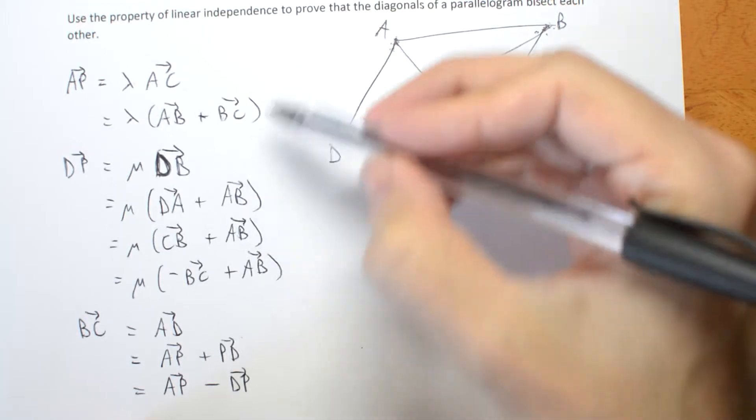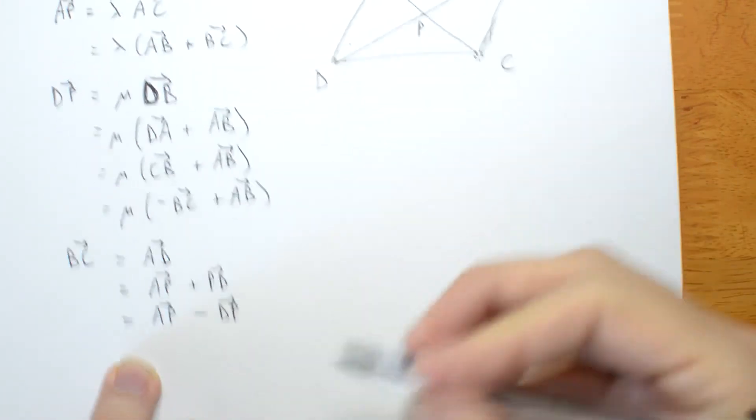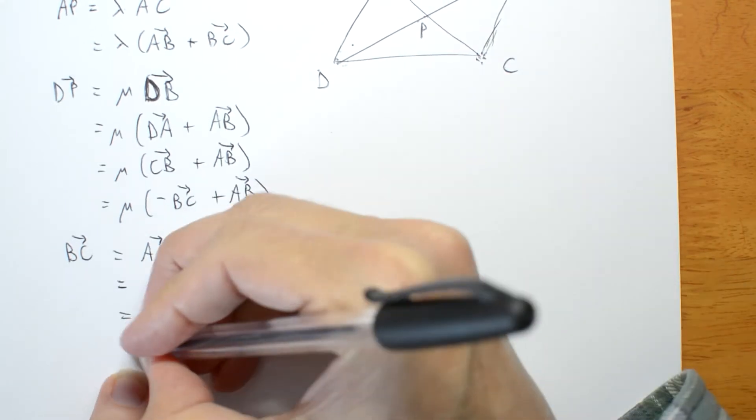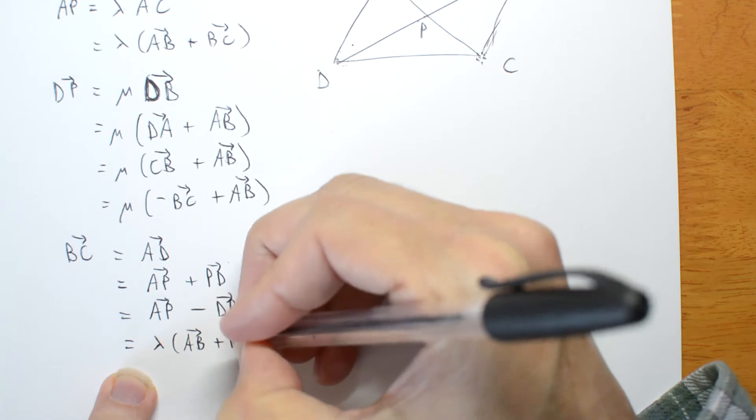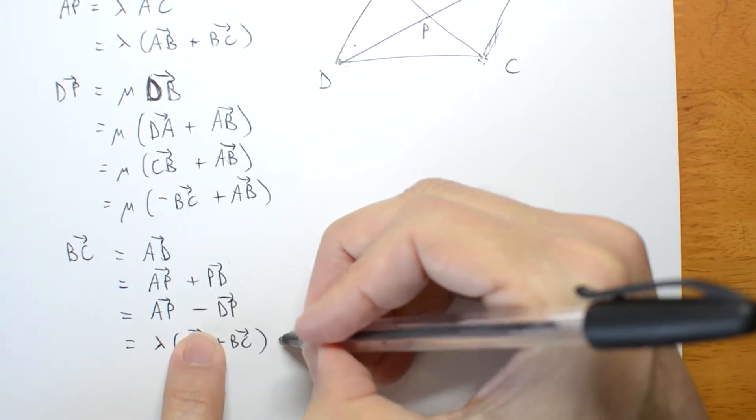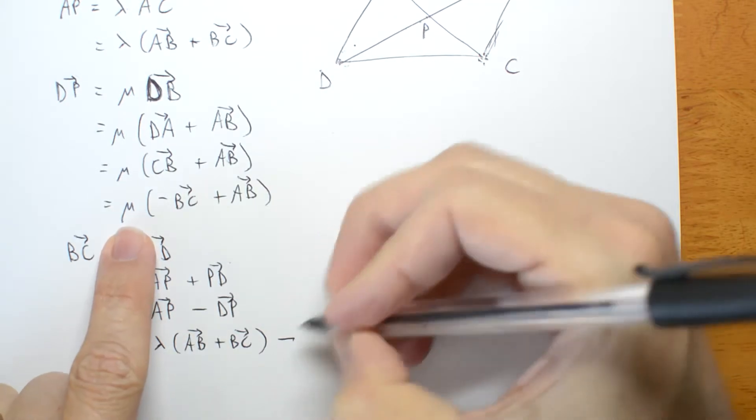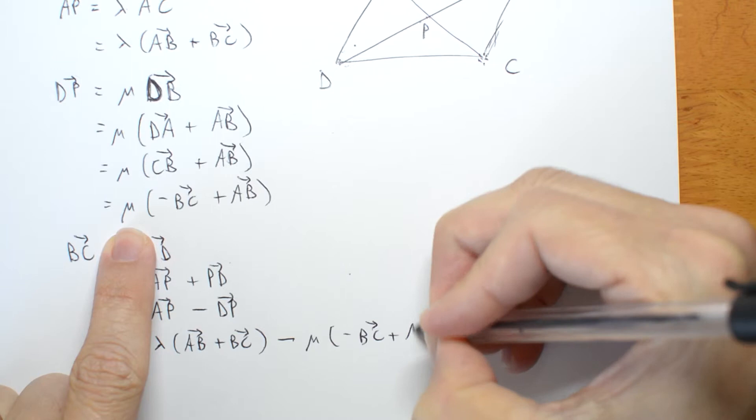Now what we're going to do is substitute these. AP is here. So it's lambda AB plus BC.